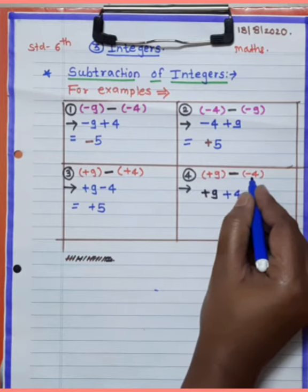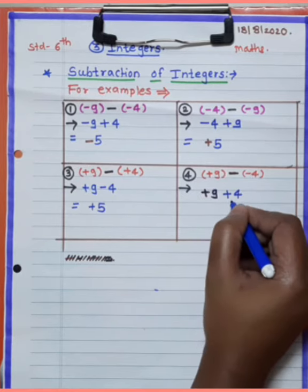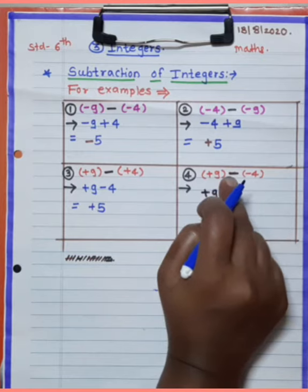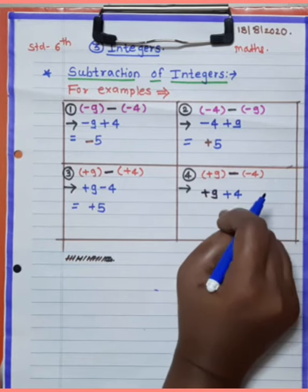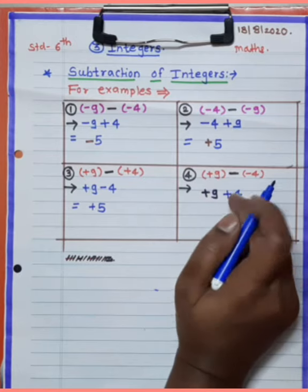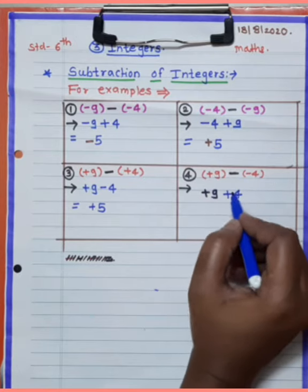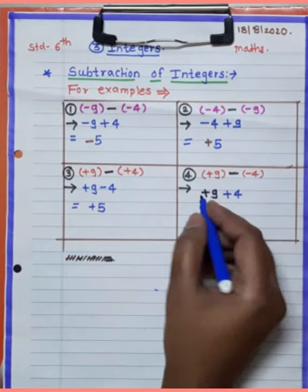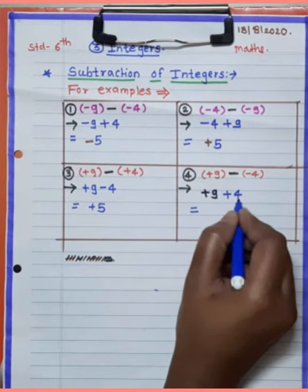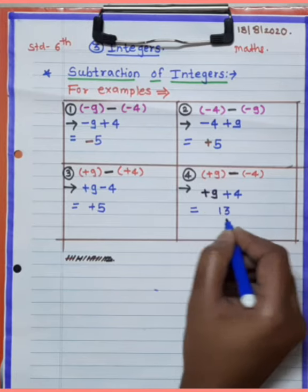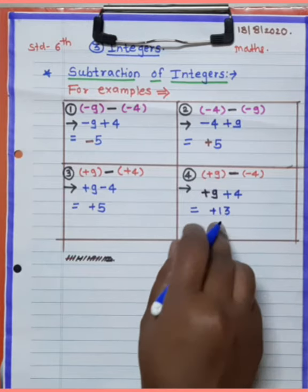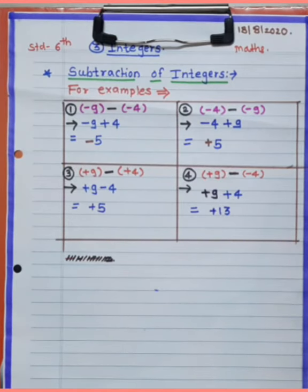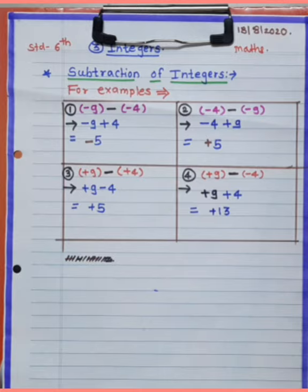Plus 9 and minus 4: bracket minus sign changes minus 4 to plus 4. So minus minus becomes plus — plus 9 plus 4 equals 13. Do you understand, students? Thank you.